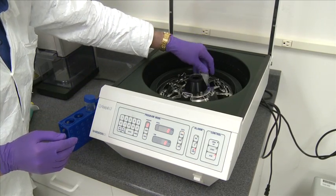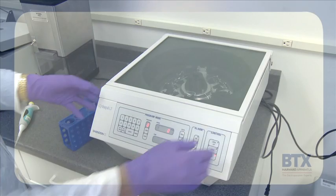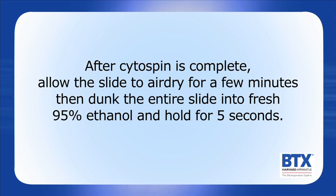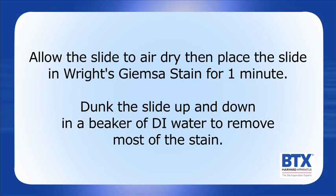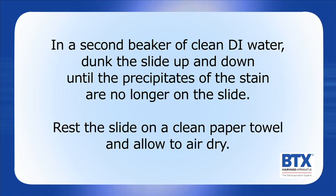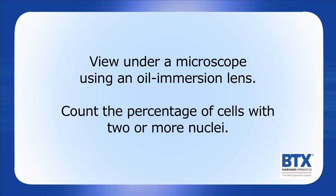Repeat for the other side using 100 µL. Place cytospin slides into the cytospin and set to 350 RPM for 2 minutes. After cytospin is complete, allow the slide to air dry for a few minutes, then dunk the entire slide into fresh 95% ethanol and hold for about 5 seconds. Allow the slide to air dry, then place the slide in Giemsa stain for 1 minute. Dunk the slide up and down in a beaker of DI water to remove most of the stain. In a second beaker of clean DI water, dunk the slide up and down until the precipitates of the stain are no longer on the slide. Allow to air dry, then view under a microscope using an oil-immersion lens. Count the percentage of cells with two or more nuclei.